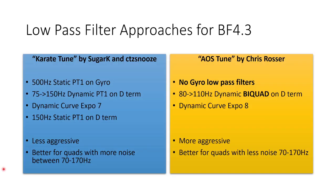In this video we're going to be considering two low pass filter approaches for Betaflight 4.3. The first is the karate tune which has these settings I would say it's a less aggressive filter tune and it's certainly going to be better for quads with more noise between 70 and 170 hertz and the second filter approach is what I'm calling the AOS tune. I would consider this to be a more aggressive tune and it's better for quads with less noise in that range of 70 to 170 hertz.